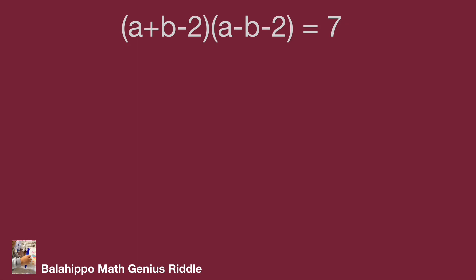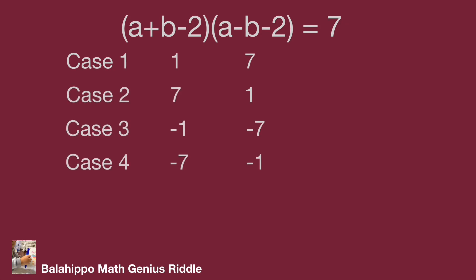(a plus b minus 2) and (a minus b minus 2) — these two quantities multiplied equal 7. There are four cases to meet this result: 1 times 7 equals 7, 7 times 1 equals 7, negative 1 times negative 7 equals 7, and negative 7 times negative 1 equals 7.